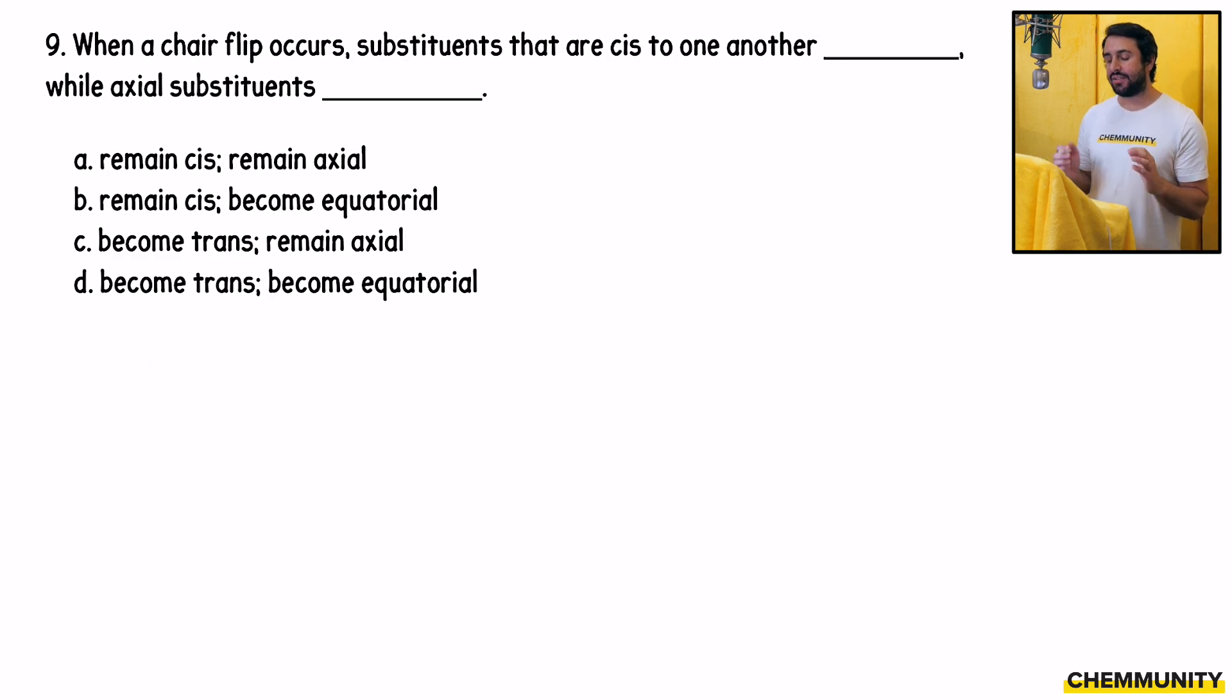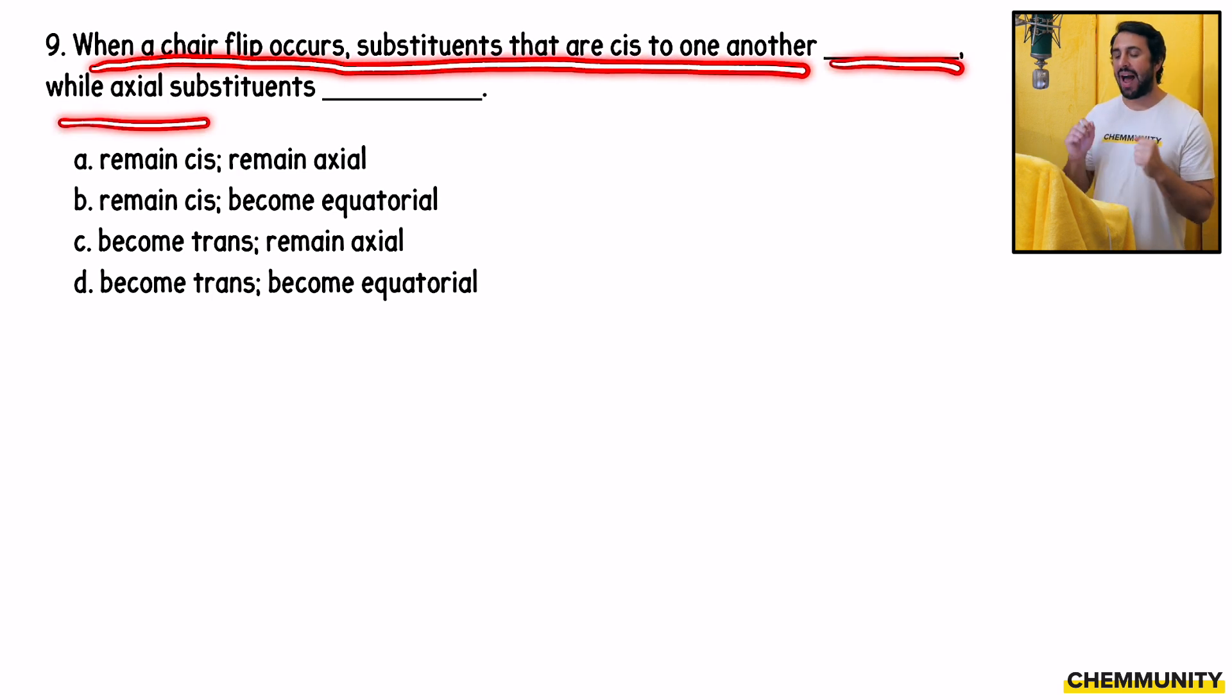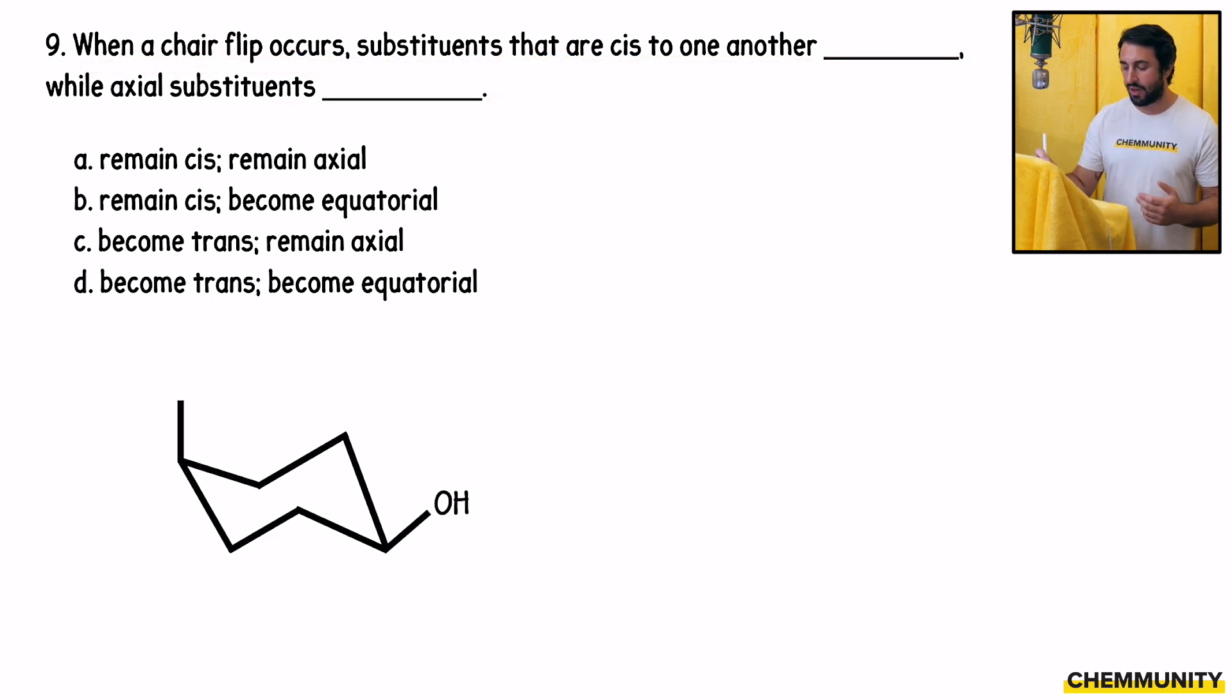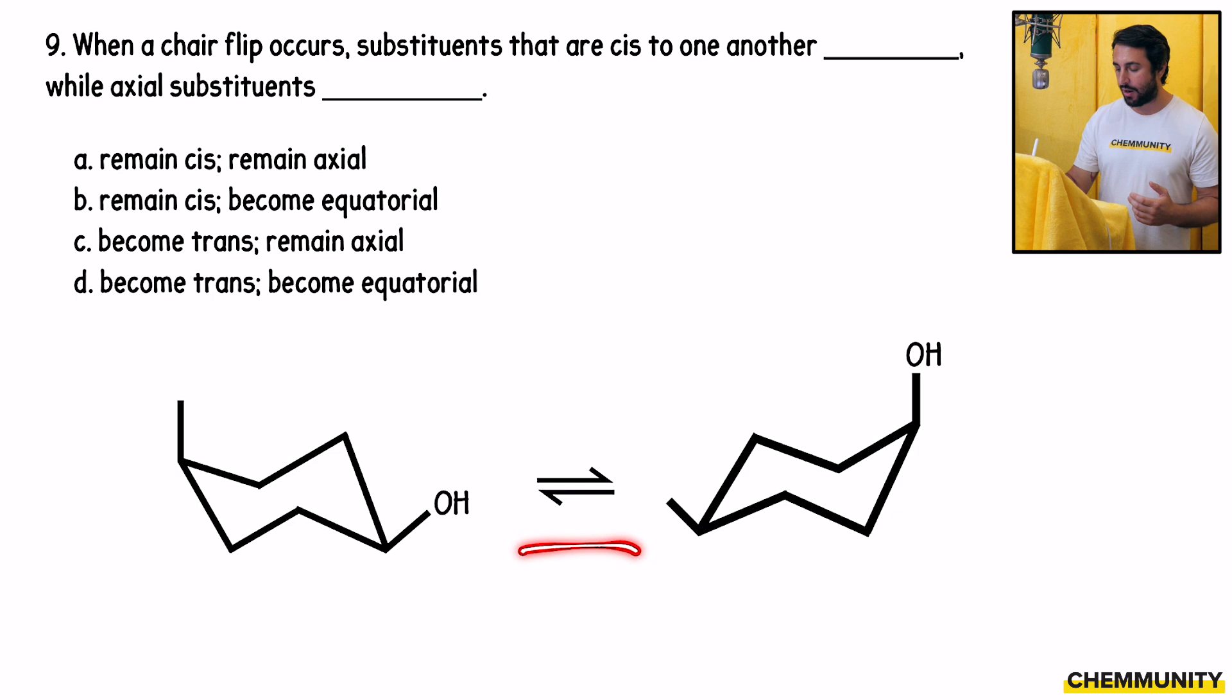Number nine asks, when a chair flip occurs, substituents that are cis to one another blank, while axial substituents blank. So let's draw a chair that'll be in equilibrium with the other chair. The leftmost carbon had that methyl. That was up, so it'll stay up, but it'll now be equatorial. Hydroxyl was up right there, and now it'll remain up, but now it'll be axial.